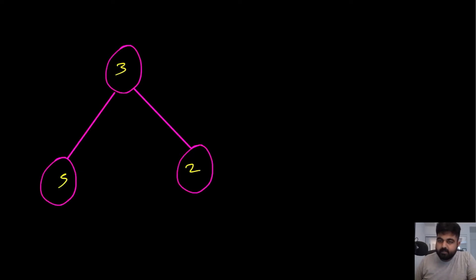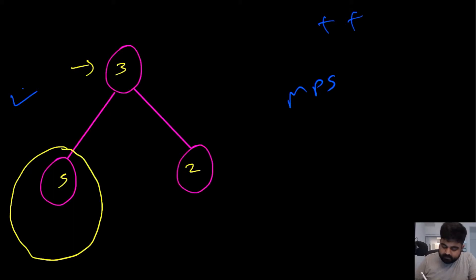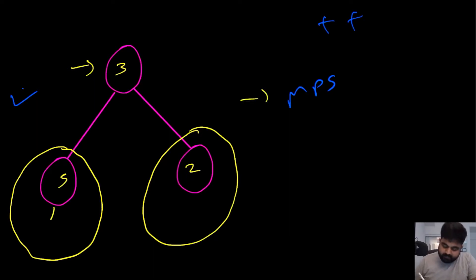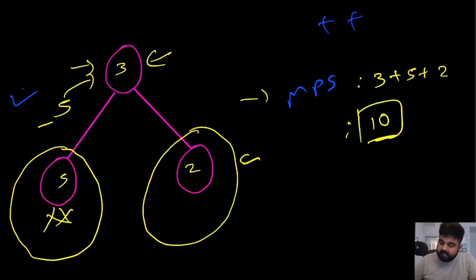Before coming up with the optimal solution, let me show you a few concepts with examples. For a tree where all nodes are positive, at any given root we check what the left subtree and right subtree have to offer. The left subtree has one node contributing 5, and the right subtree contributes 2, so the total maximum path sum is 3 plus 5 plus 2 equals 10. Since all nodes are positive, it is in our favor to include all of them.